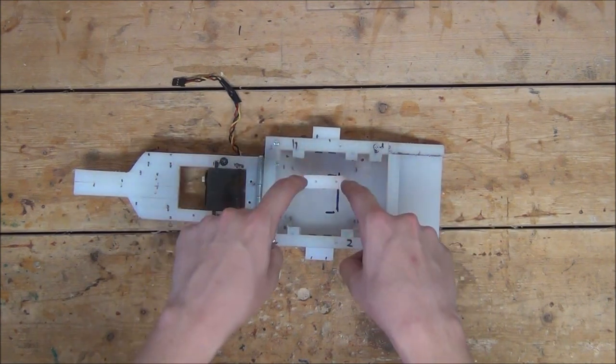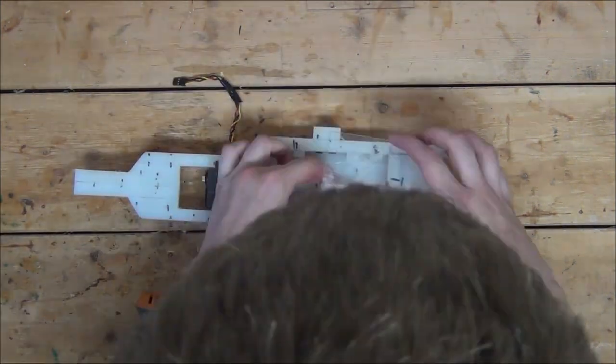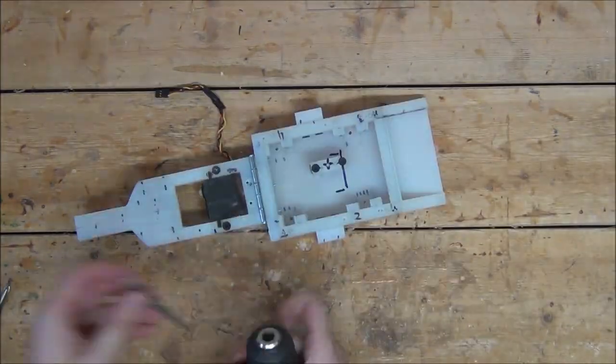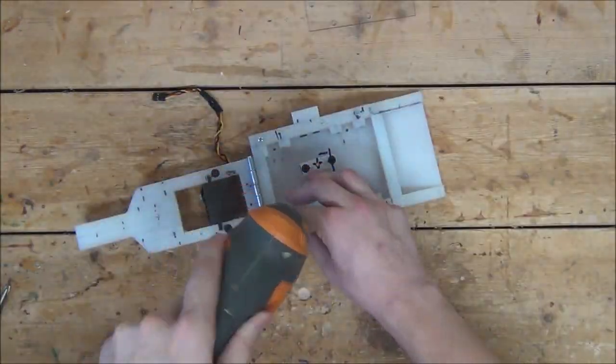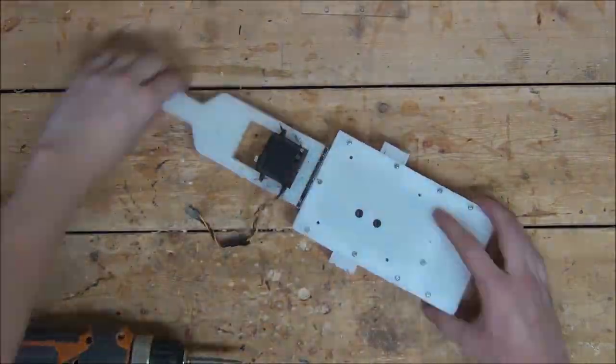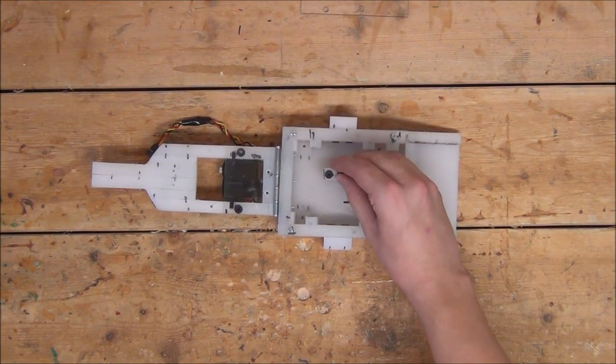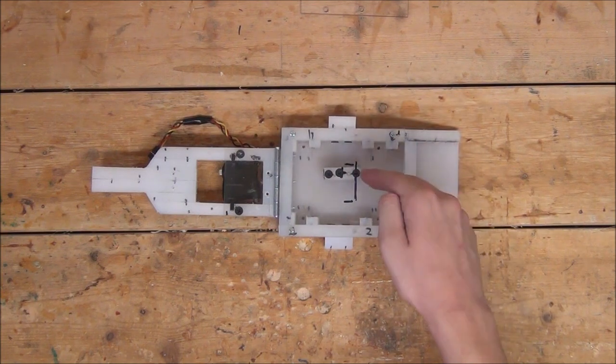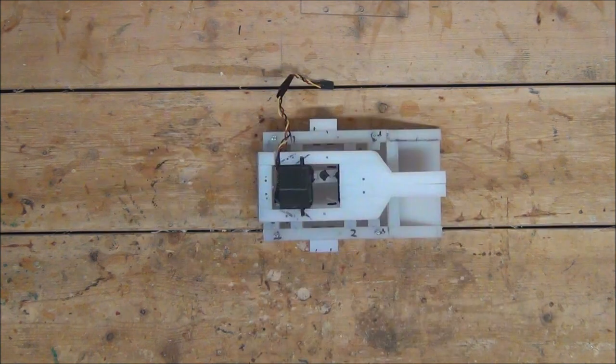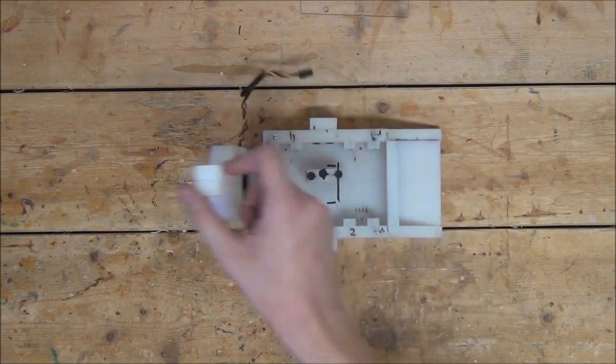So what I'm going to do instead is sandwich a small block in between the top and bottom frame and screw in place on each side. Like that. Then we can just send the anchoring screw into the middle of the block. That way it won't be pulling on just the Lexan, but it'll instead be pulling on the whole frame.